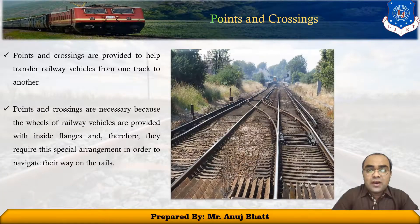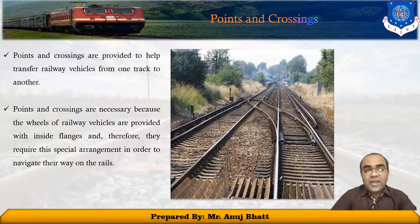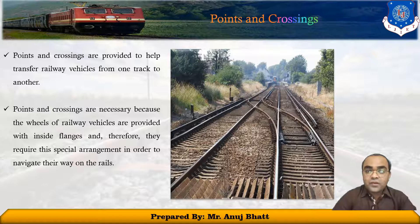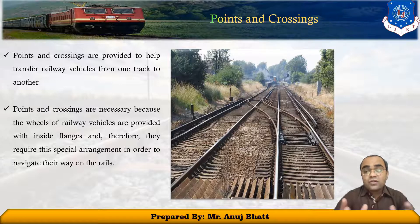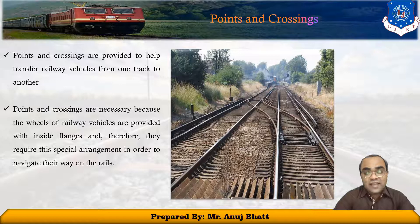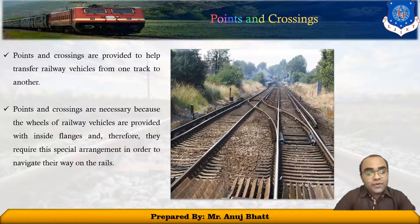These points and crossings are provided to transfer the railway vehicles from one track to another. The track may be parallel to, diverging from, or converging with each other. These points and crossings are necessary because the wheels of railway vehicles are provided with inside flanges, and therefore they require such special arrangement in order to navigate their way on the rails. The points or switches aid in diverting the vehicles, and the crossings provide gaps in the rails so as to have the flange wheel roll over them. A complete set of points and crossings along with the lead rails are known as the turnouts.